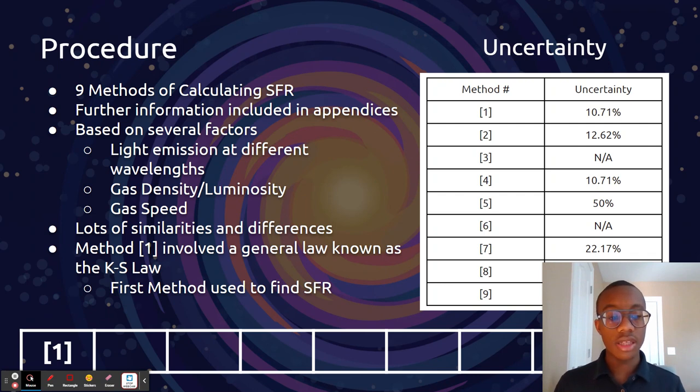I have nine different methods of calculating star formation rate. They have a lot of similarities and differences, and they're all based on several different factors, all underlying because they calculate star formation rate. Method one uses a general law known as the KS law.